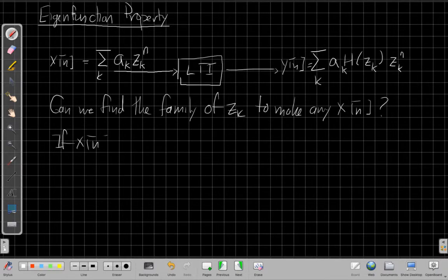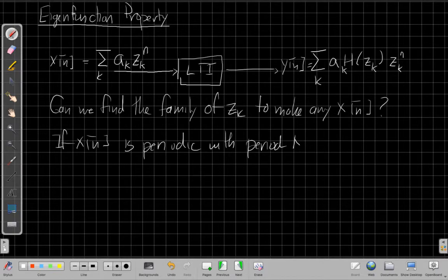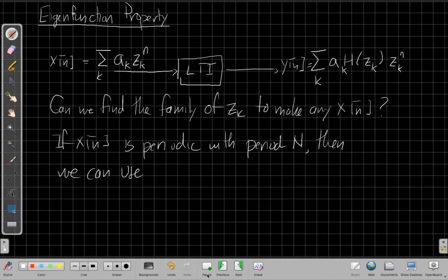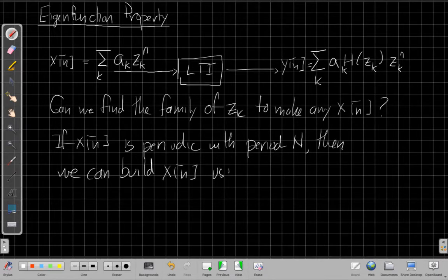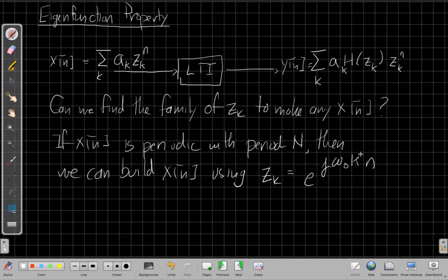If x of n is periodic with period N, then we can build x of n using like the z sub k's will be a complex exponential that's e to the j omega naught times k times n. So using complex exponentials, which we saw in Euler's formula, this is a cosine plus an imaginary sine part, where I need to define one more important thing. This omega naught is what we call the fundamental frequency. It's 2 pi over the period. So I have to find the period of the signal first is why we talked about that earlier this semester. But this is what we call the fundamental frequency.